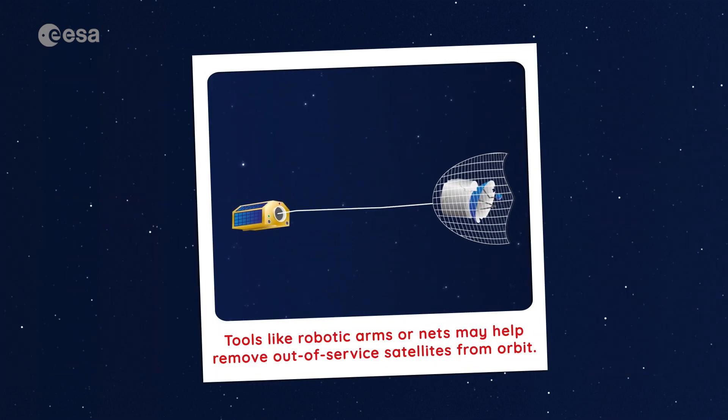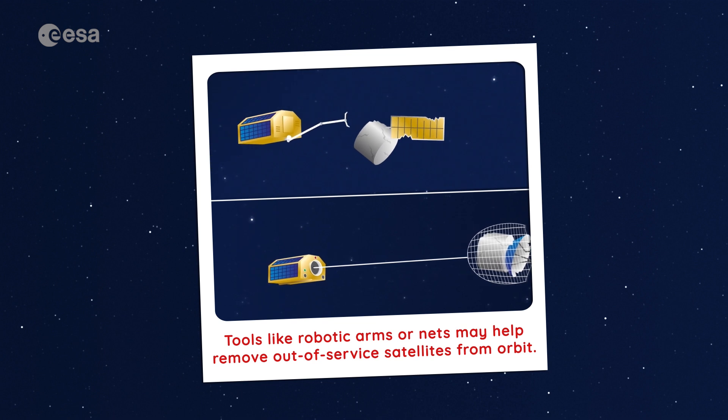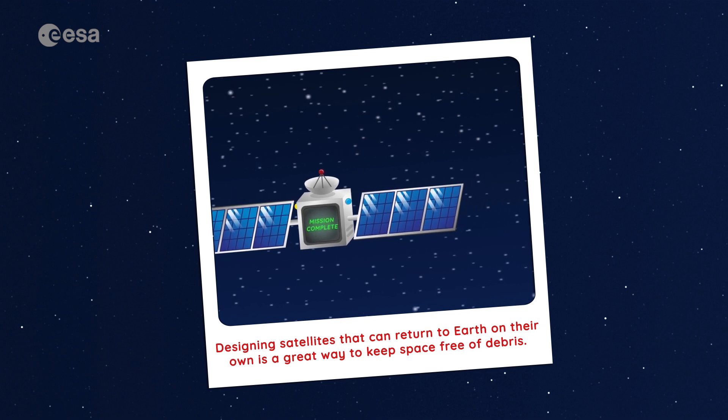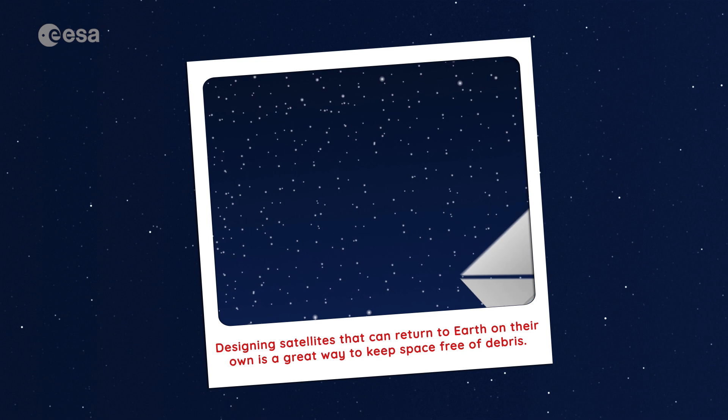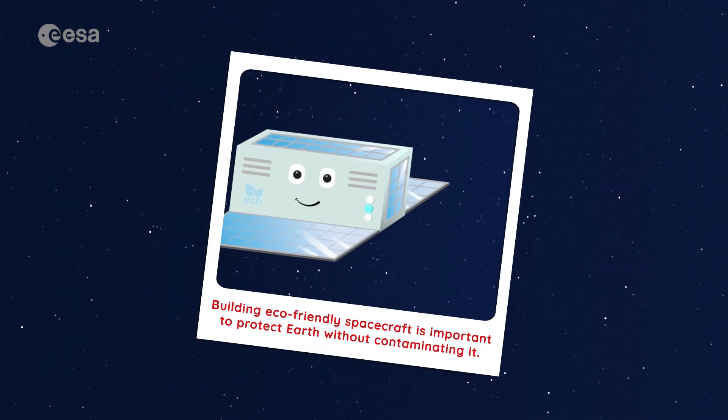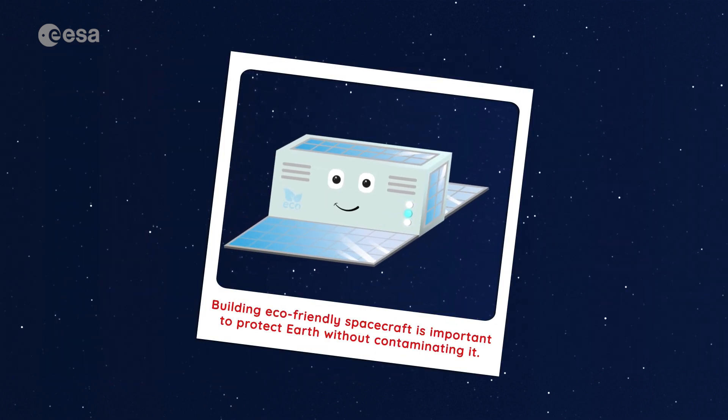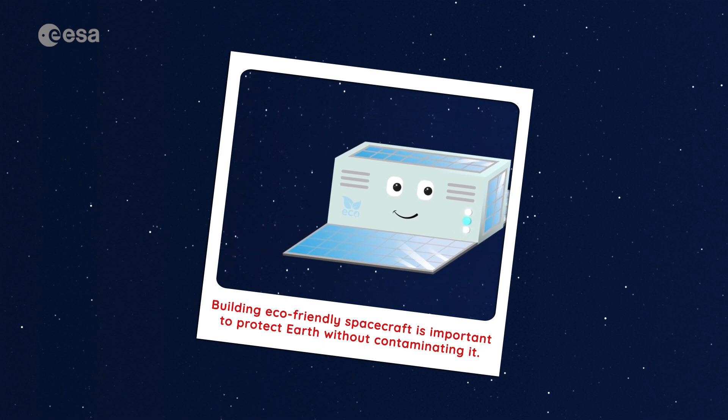Tools like robotic arms or nets may help remove out-of-service satellites from orbit. Designing satellites that can return to Earth on their own is a great way to keep space free of debris. Building eco-friendly spacecraft is important to protect Earth without contaminating it.